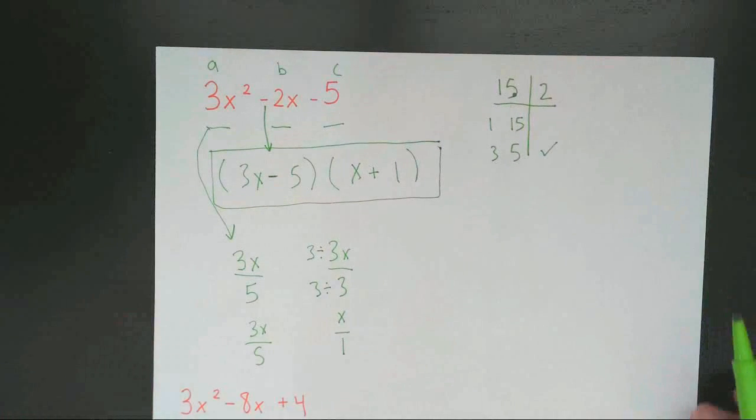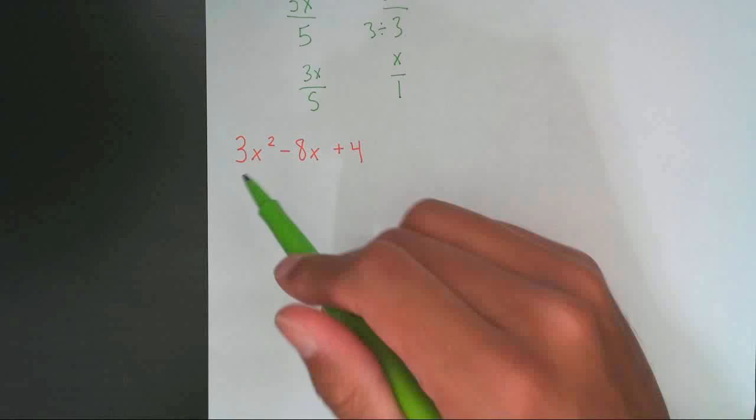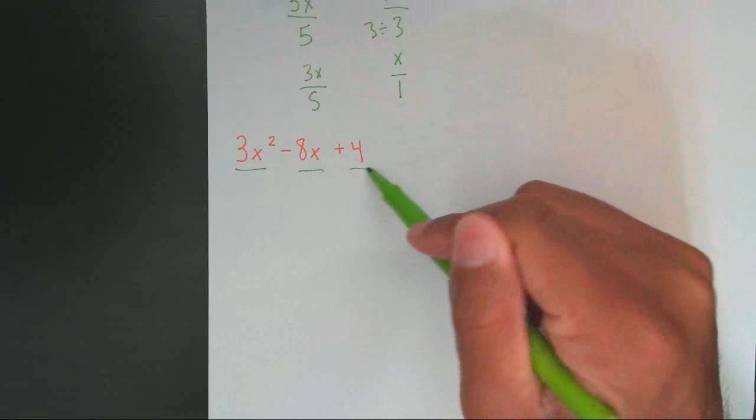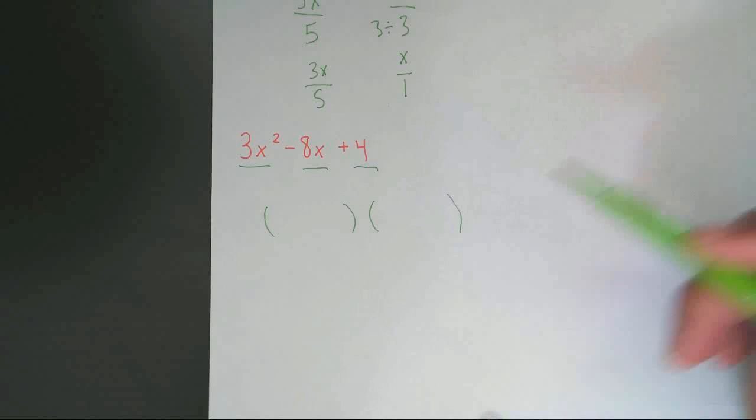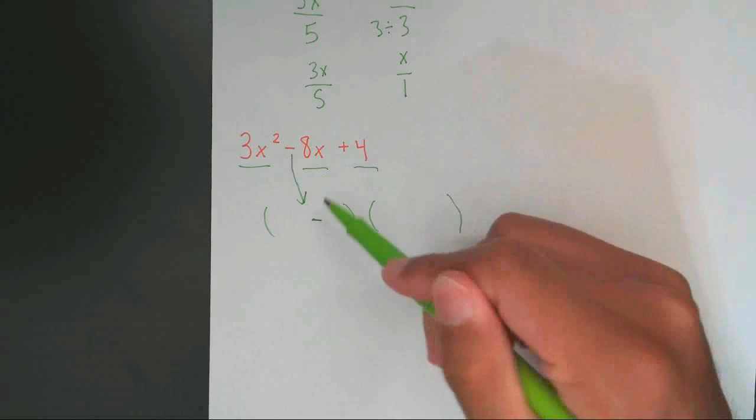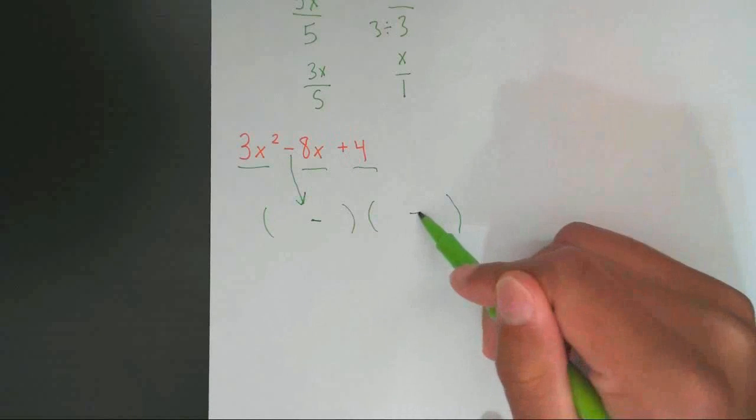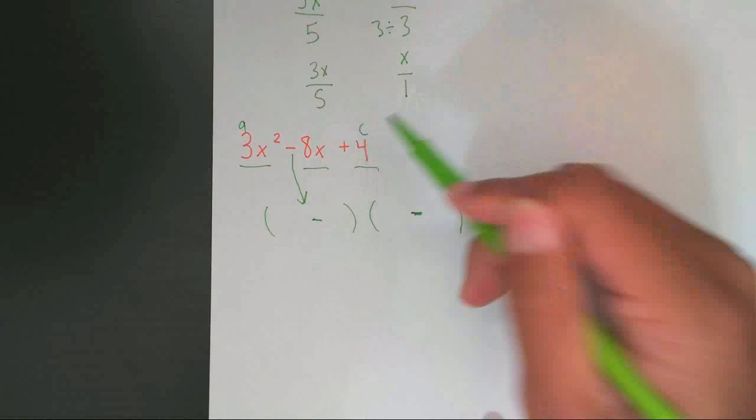So now we're going to look at a different example. 3x squared minus 8x plus 4. Count the number of terms. 1, 2, 3. I automatically know it's two parentheses. Now I have to figure out the signs. Drop the first sign, put a minus sign. Negative times a positive, negative.